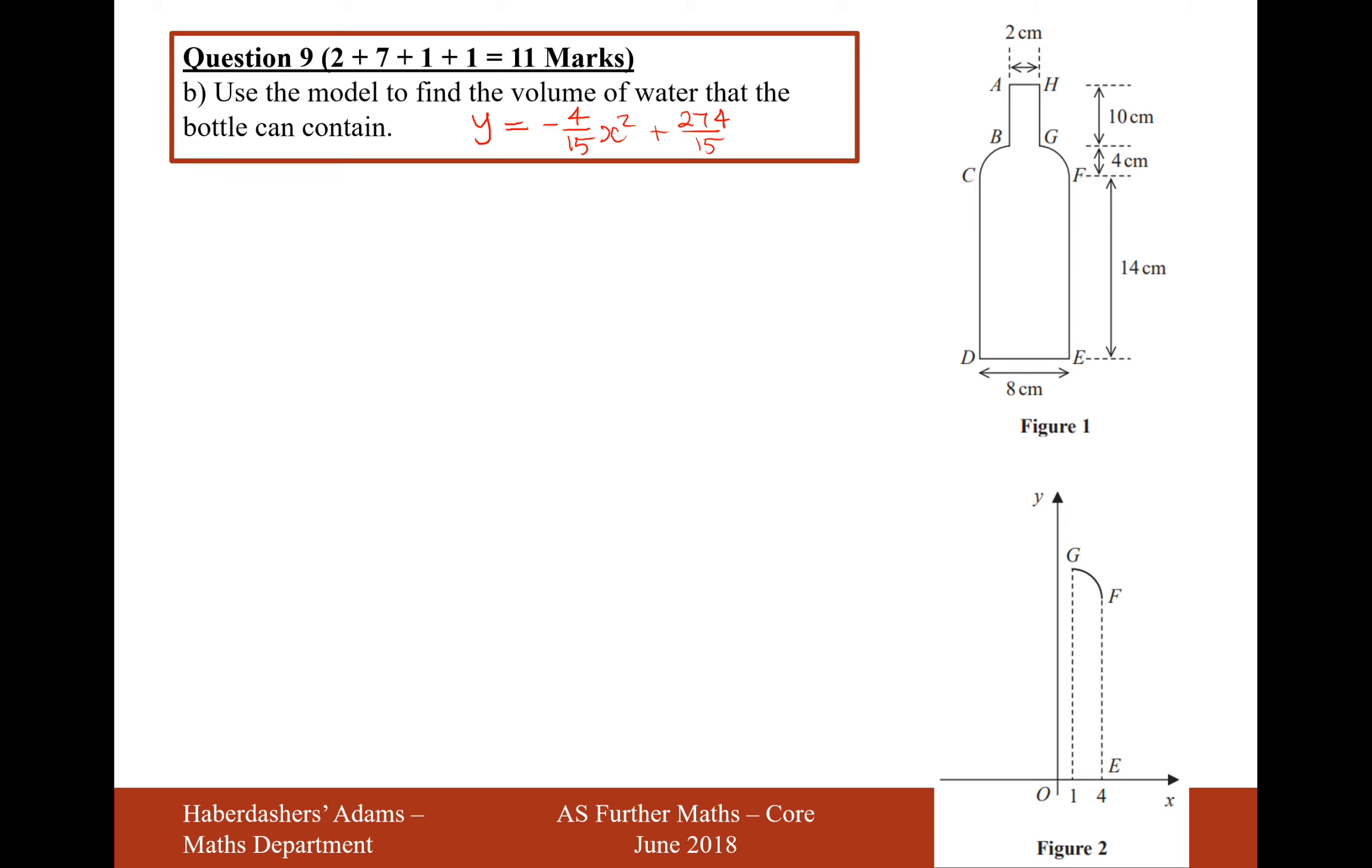Okay, so use the model to find the volume of water that the bottle can contain. So let's divide it into three sections, then we've got this section here, this section here, this section here. We'll call it A on the neck, B on this quadratic bit, and C on the main bottle on the water there.